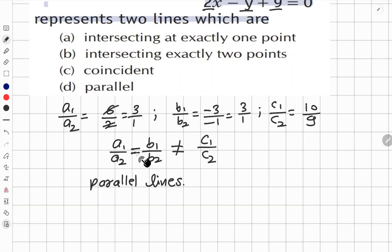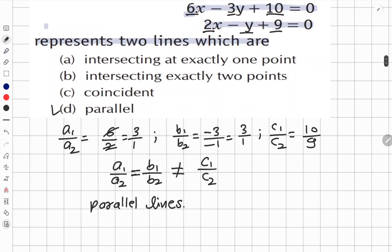If a₁ upon a₂ is not equal to b₁ upon b₂, then it will be intersecting lines. Or if all three are equal, then coincident lines. So the answer here is parallel lines, option D.